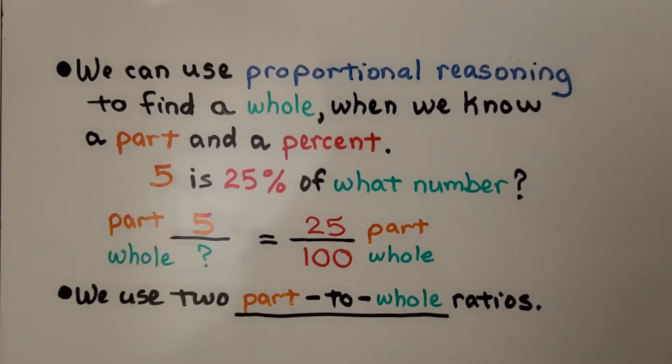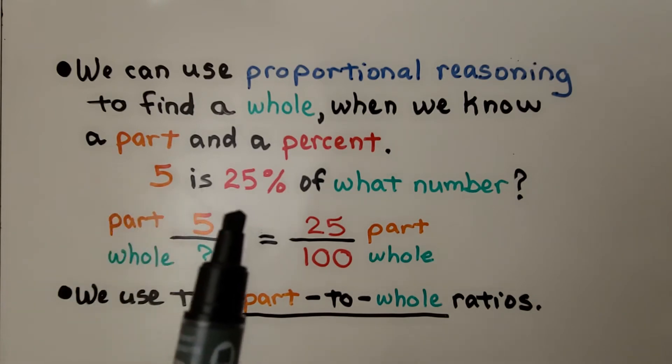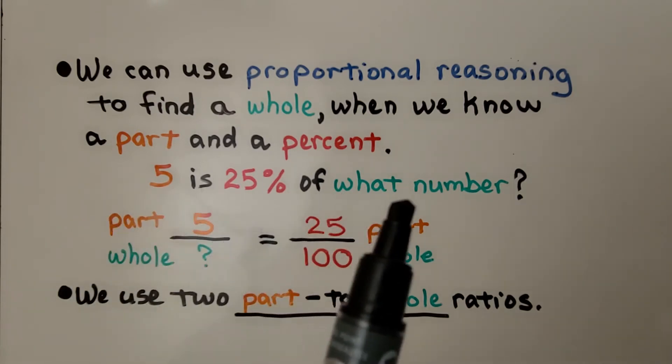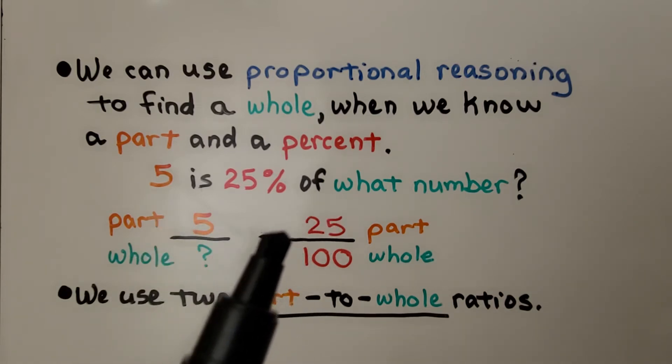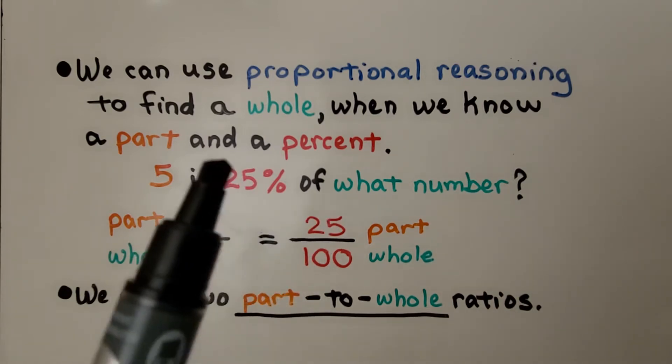We can use proportional reasoning to find a whole when we know a part and a percent. The problem states: 5 is 25% of what number? We know the part is 5, and we've got 25 hundredths as our percentage.